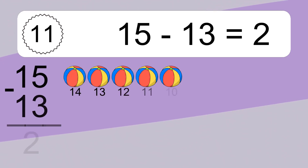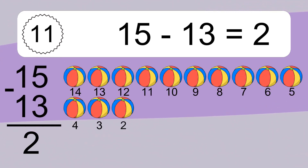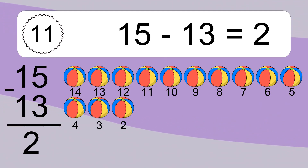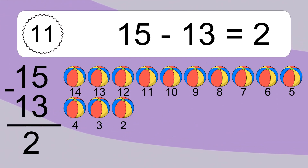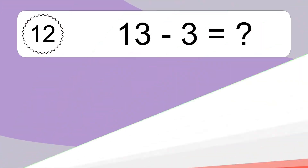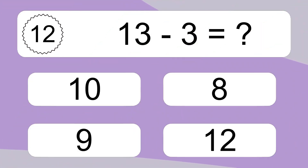15 minus 13 equals 2. Let's count it. 14, 13, 12, 11, 10, 9, 8, 7, 6, 5, 4, 3, 2. 13 minus 3 equals what?